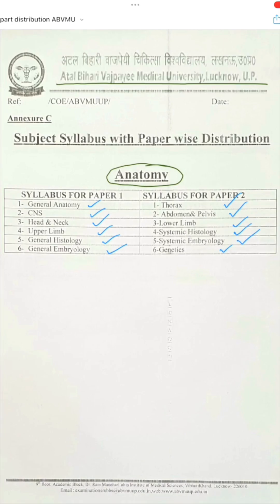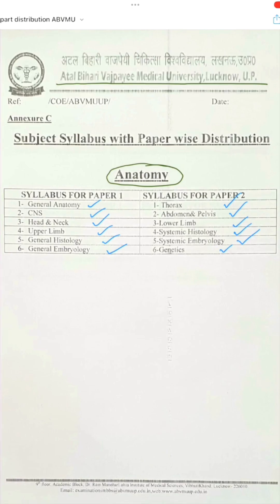Talking about histology and embryology, there is one important thing hidden in paper 1 — systemic histology concerned with CNS, head and neck, or upper limb will also be asked in paper 1. For example, they might ask you the histology of cerebellum, cerebrum, thyroid, salivary glands, parotid, or submandibular glands. Questions on systemic histology as well as systemic embryology will be embedded within the long questions concerned with the gross anatomy of CNS, head and neck, and upper limb.